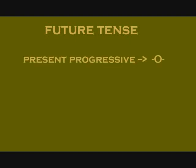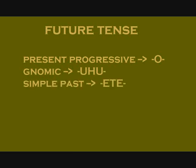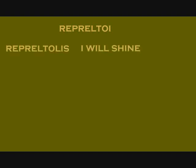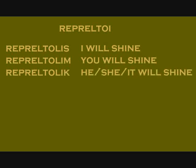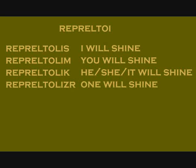To make weather predictions, you'll need to learn the future tense. So far we've had the tense markers 'o' for present progressive, 'uhu' for nomic, and 'ete' for simple past. For the future, the tense marker is 'o-li.' So to conjugate repreltoi in the future: singular would be repreltolis meaning I will shine, repreltolin meaning you will shine, repreltoli meaning he, she, or it will shine, and repreltoliser meaning one will shine. Remember you can add ebb to the first three to make them plural.